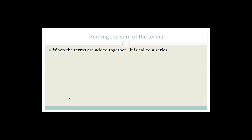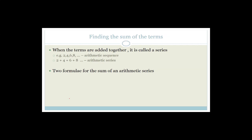Finding the sum of the arithmetic sequence — when terms are added together it's called a series. If terms are separated by commas it's a sequence, but as soon as you add them it's a series. There are two formulas: Sn equals n over 2 times (2A plus (n minus 1)D), and Sn equals n over 2 times (A plus L), where L is the last term. Both are on the formula sheet.